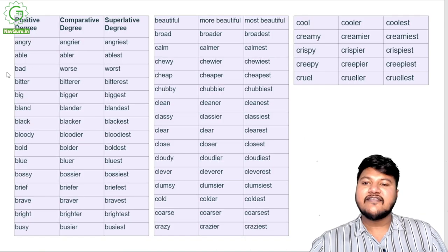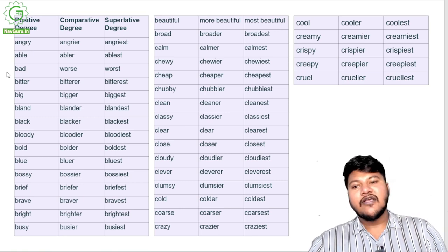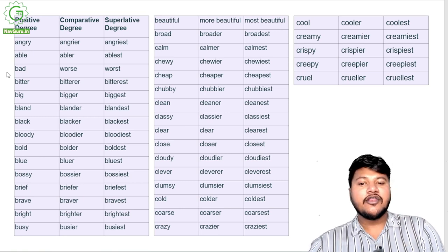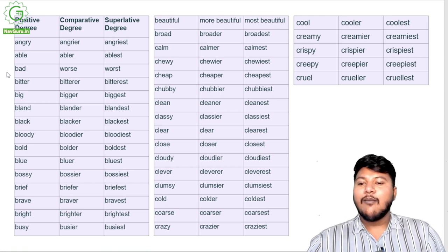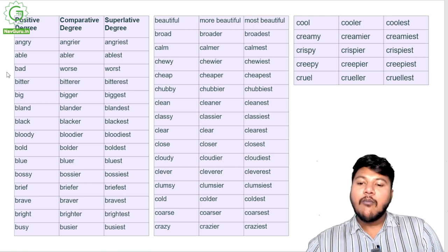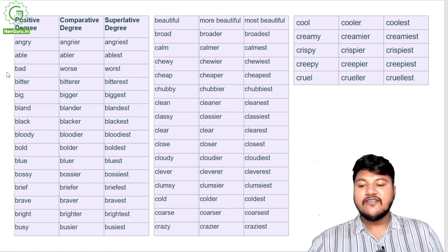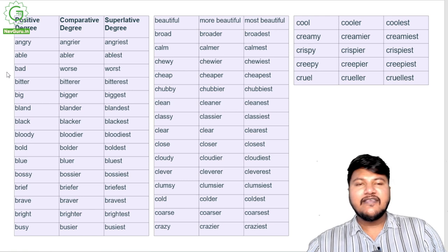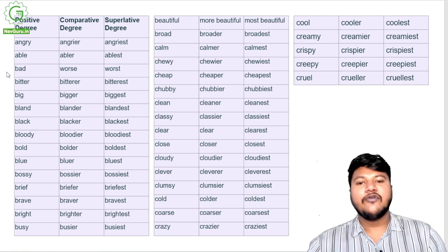Positive, comparative, superlative: angry, angrier, angriest; able, abler, ablest; bad, worse, worst; bitter, bitterer, bitterest; big, bigger, biggest; bland, blander, blandest; black, blacker, blackest; bloody, bloodier, bloodiest; bold, bolder, boldest; blue, bluer, bluest; bossy, bossier, bossiest; brief, briefer, briefest; brave, braver, bravest; bright, brighter, brightest; busy, busier, busiest; beautiful, more beautiful, most beautiful; broad, broader, broadest.